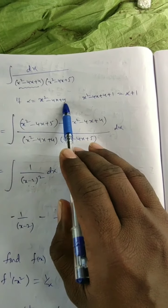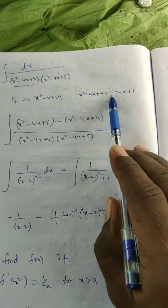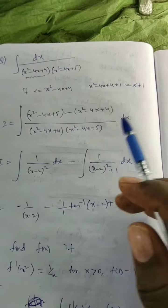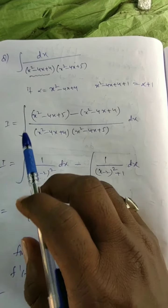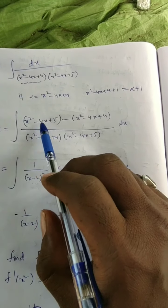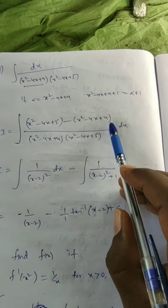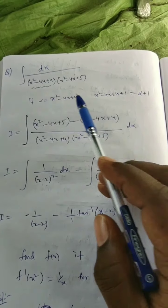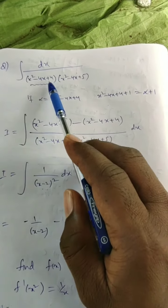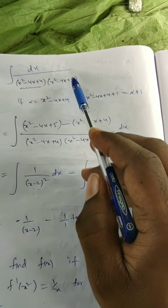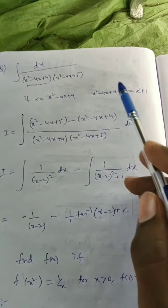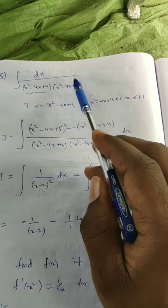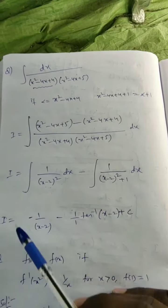Observe that x² - 4x + 4 is one expression, and x² - 4x + 5 can be written as (x² - 4x + 4) + 1. If we call x² - 4x + 4 as alpha, then the second factor is alpha + 1. So I write the numerator as (alpha + 1) - alpha, which is the difference of the two denominator factors.